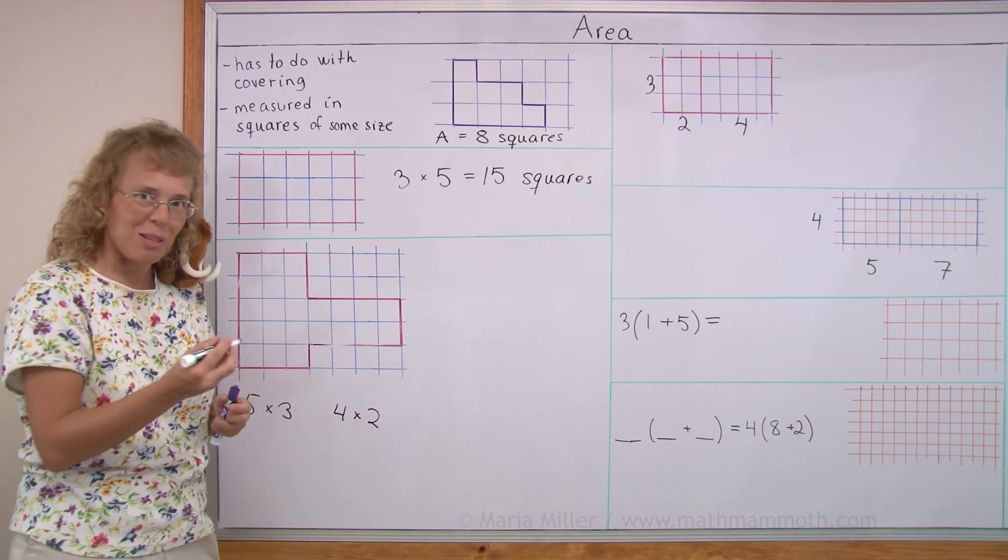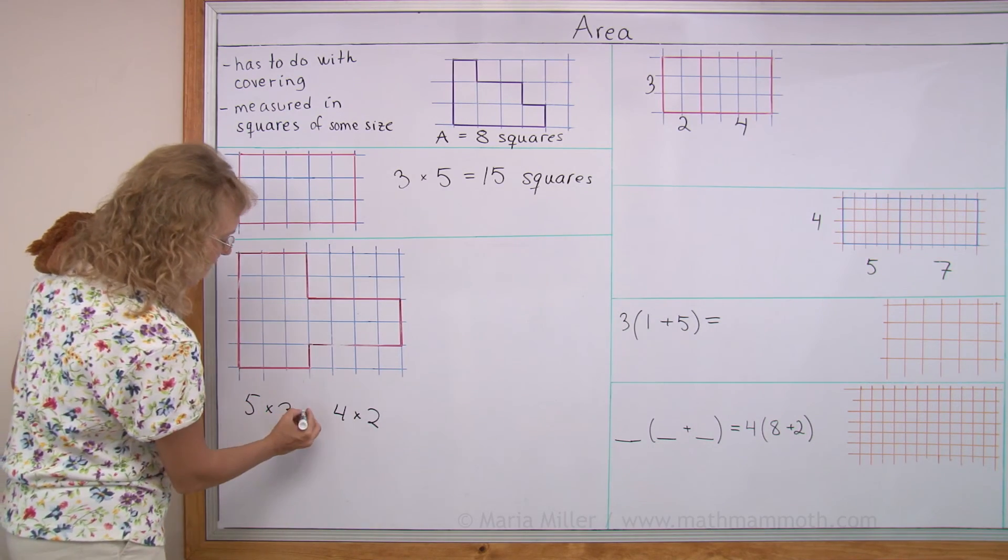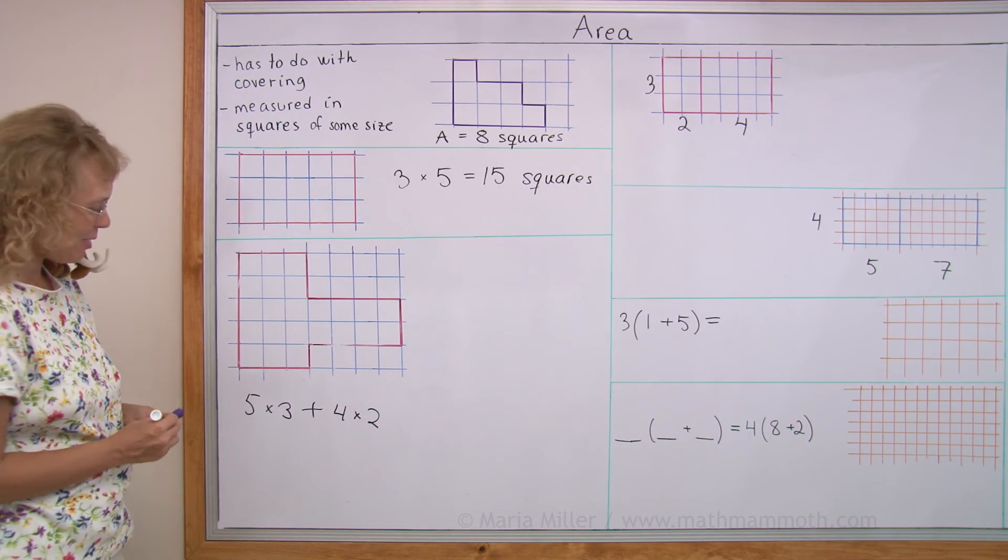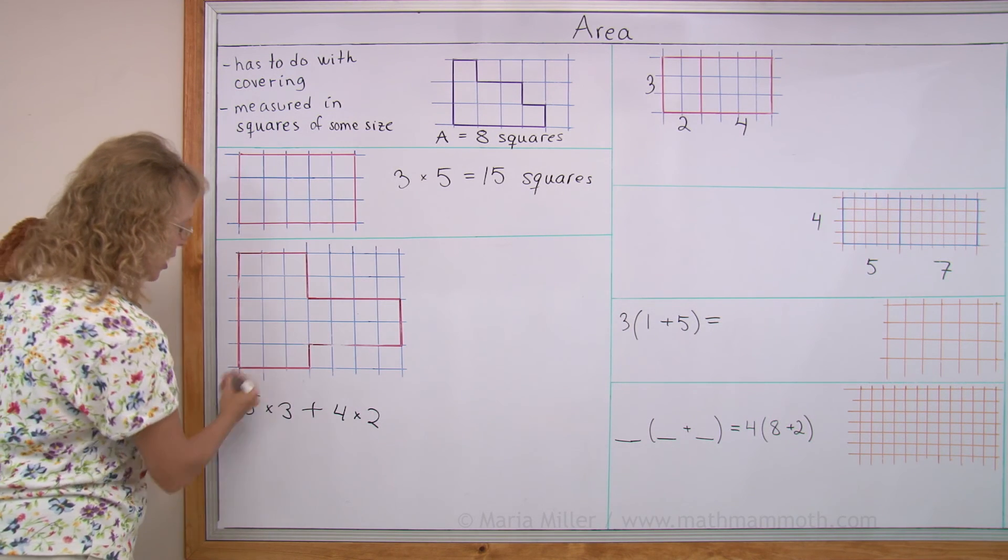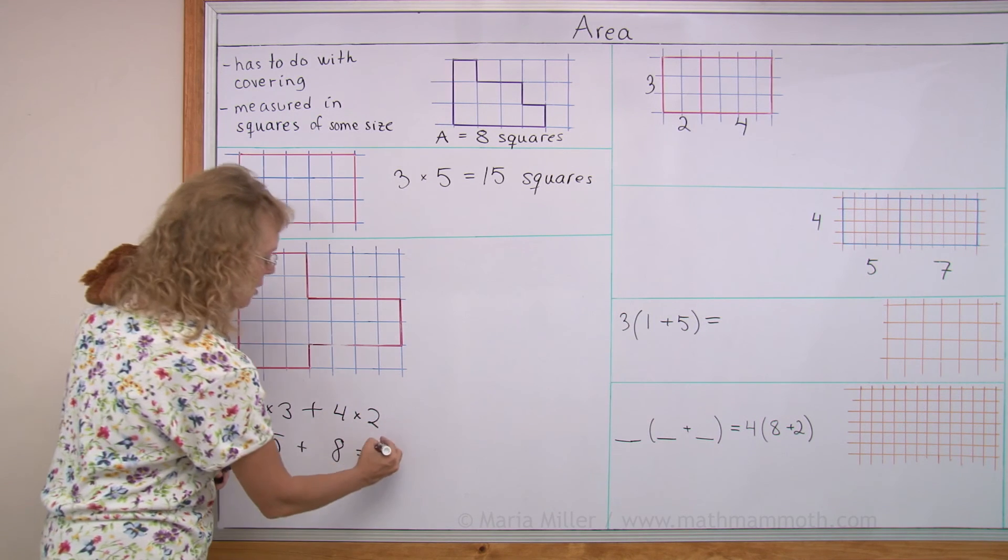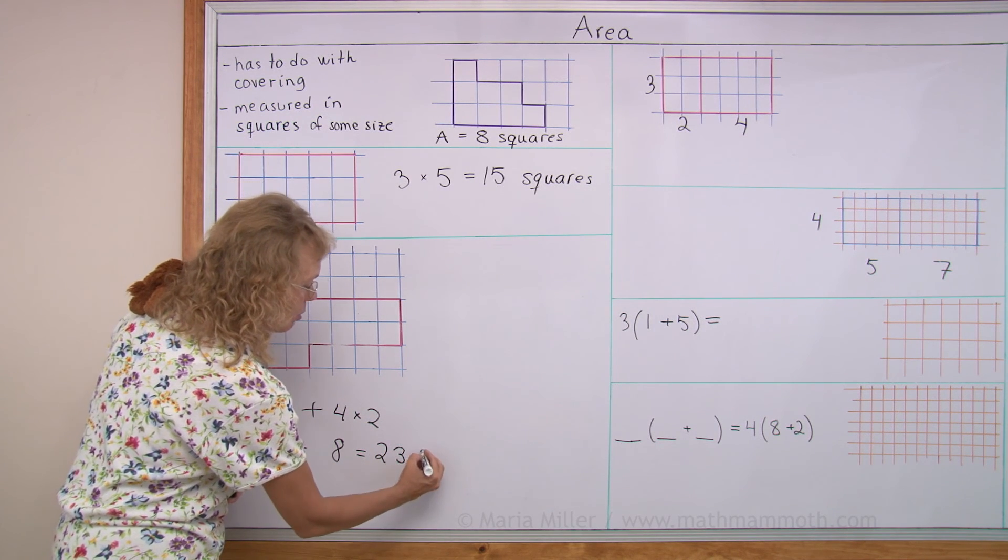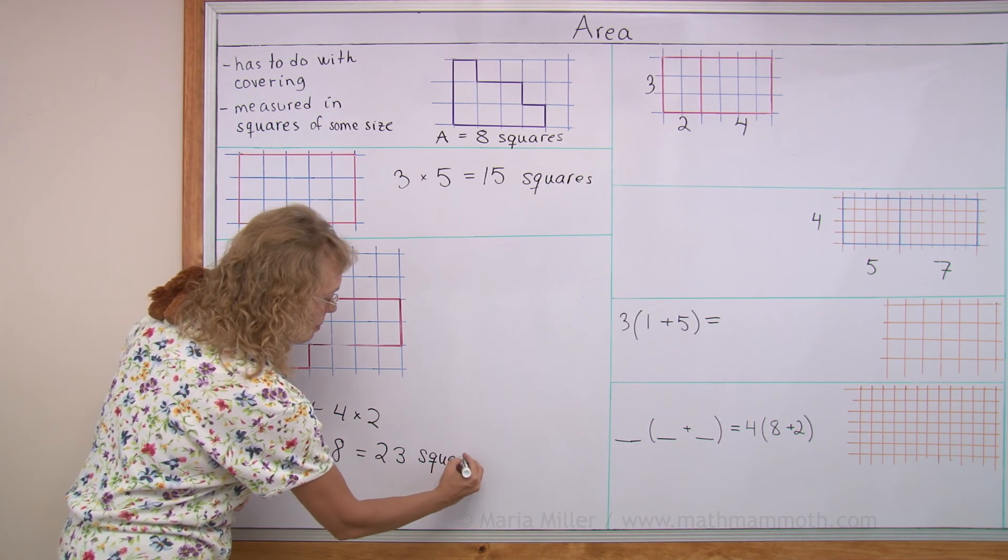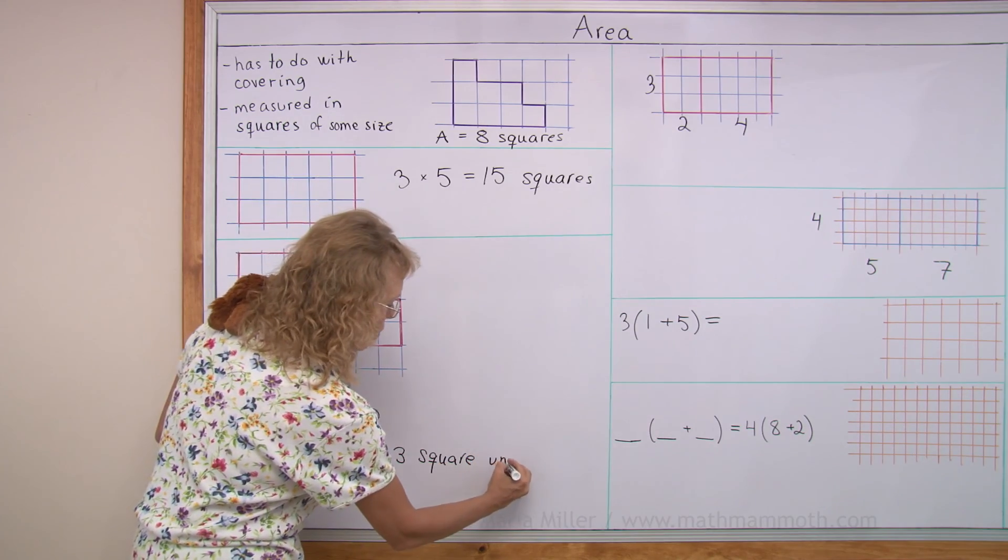Or you could write 2 times 4. That doesn't matter. And then we need to add. Right? So 5 times 3 is 15. 4 times 2 is 8. And now we get a total of 23 squares or square units. Let's write here, square units.